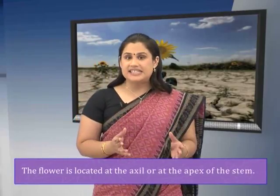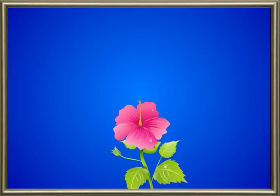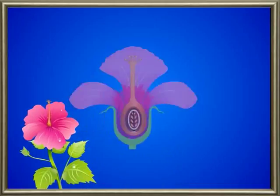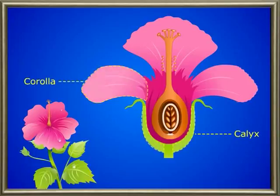Flowers are beautiful structures located at the axil or at the apex of the stem. The flower is attached to the stem with a stalk known as the pedicel. The upper part of the pedicel is swollen and is called the thalamus, on which all floral parts are arranged in four whorls: calyx, corolla, androecium, and gynoecium or pistil.